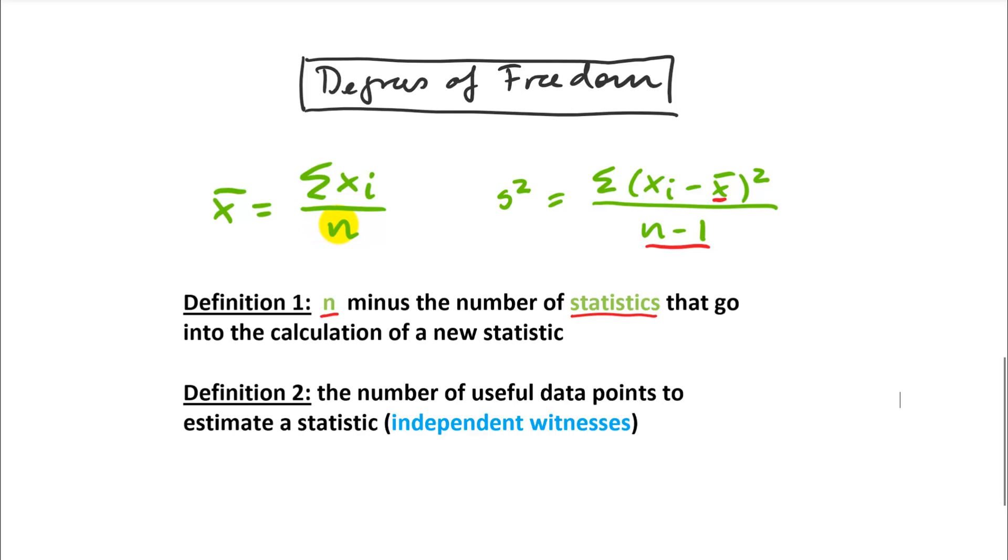So no statistics go in there, and then your degree of freedom is actually n. And the other definition, the number of useful data points to estimate a statistic, that's a little related to what I said before, the number of truly independent witnesses that are informative, that can make a difference. And if you think about it, that's true here as well. So if you think about the mean, and I get just a single sample point, is that a useful witness? Is this a useful observation? I would say it is. So before that single sample, I knew nothing. And now I do know something.